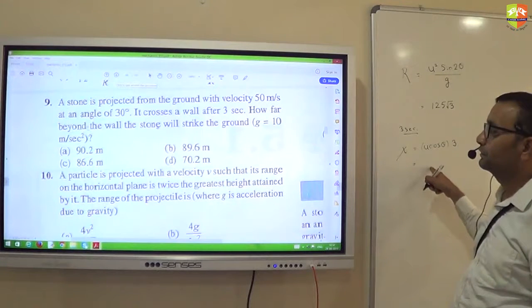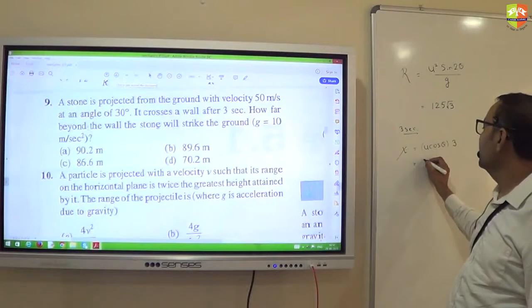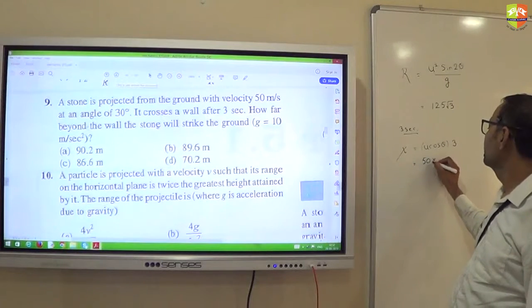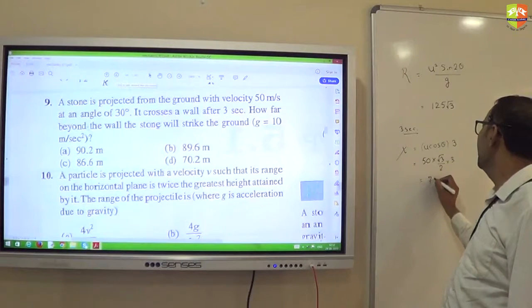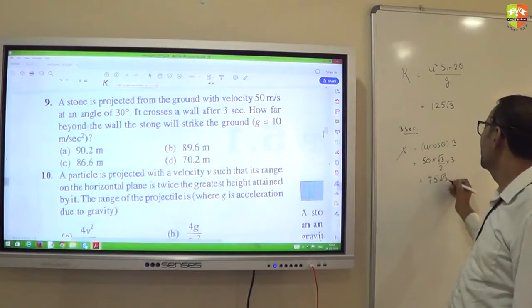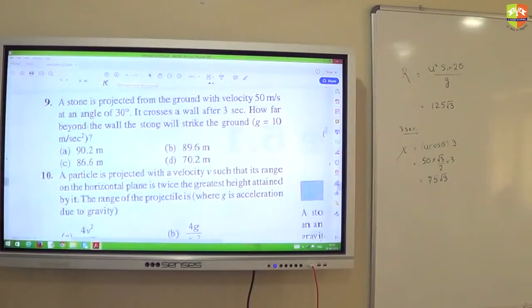So this is how much? 75√3. So this minus that is the answer. Total range minus how much it travels in 3 seconds will be the answer.